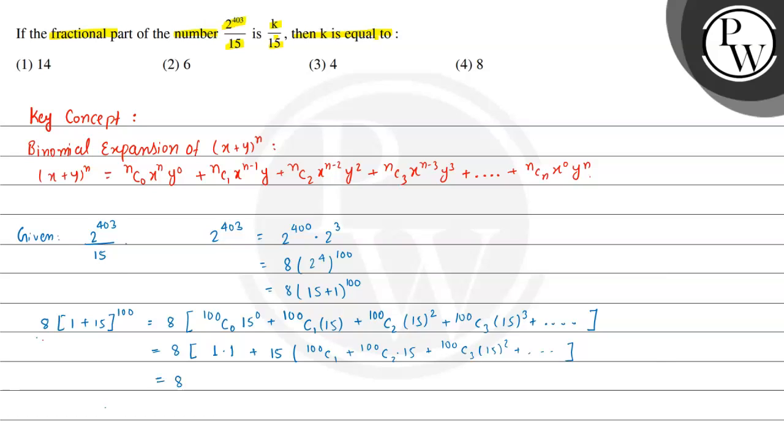We can write this as 8 multiplied by (1 + 15λ), where λ represents those bracketed terms. When we expand, the 15s cancel and we get 8 divided by 15 plus 8λ.